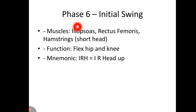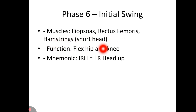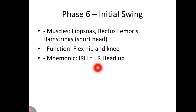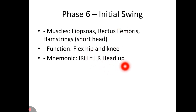Phase 6 is initial swing. Muscles involved are iliopsoas, rectus femoris, and hamstrings short head — their function is to flex the hip and knee. The mnemonic is 'IRH Head Up': I for iliopsoas, R for rectus femoris, and H of Head Up for hamstrings.